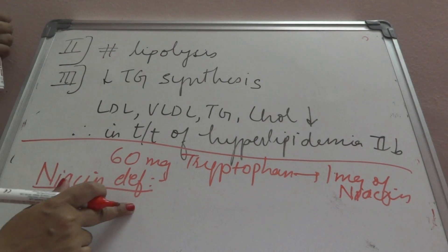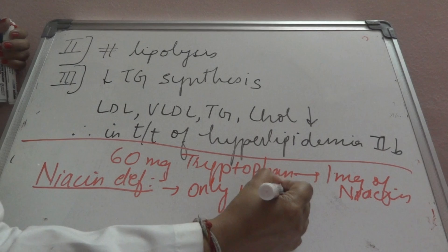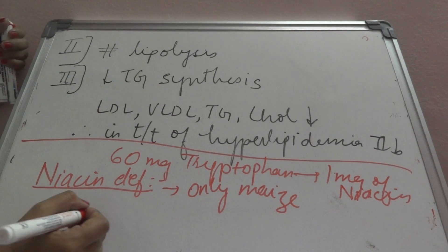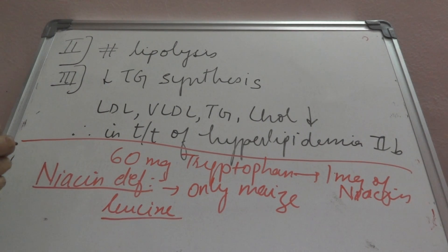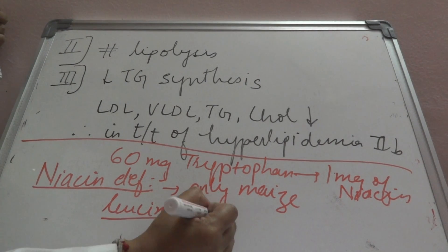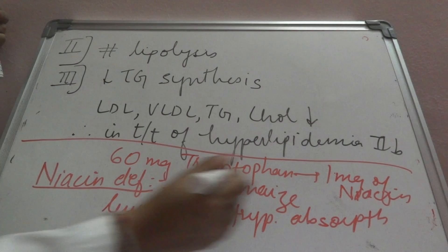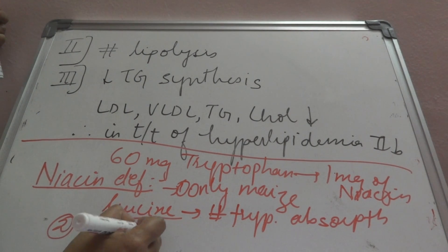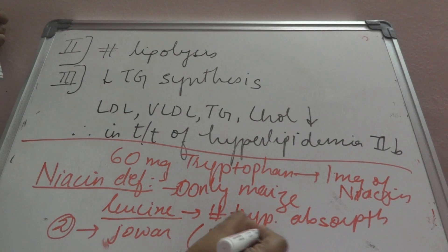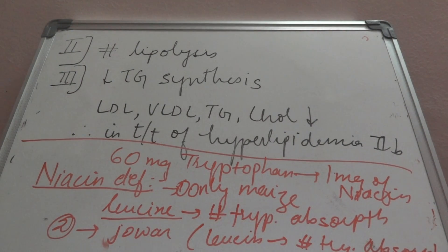Niacin is present in cereals and in meat and liver, but niacin deficiency can be seen in those persons who consume only maize. Maize has leucine, and leucine interferes with the formation of niacin because it inhibits tryptophan absorption. Similarly, those who consume lots of jowar will also develop niacin deficiency because jowar also has lots of leucine. A third cause is isoniazid intake.